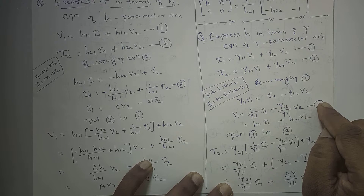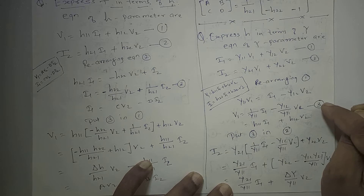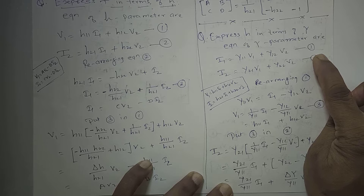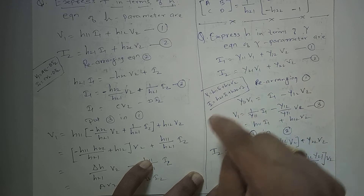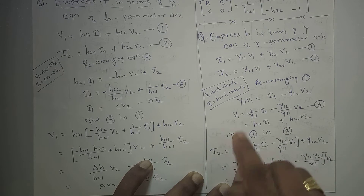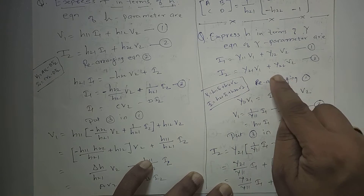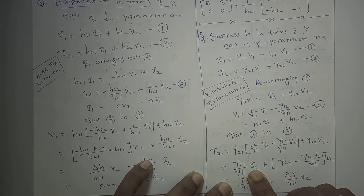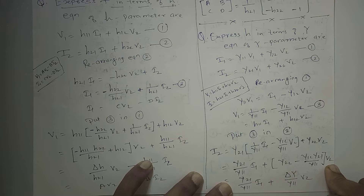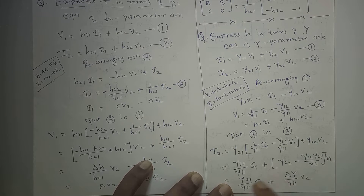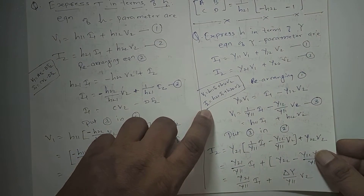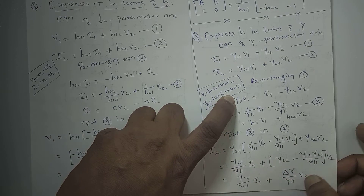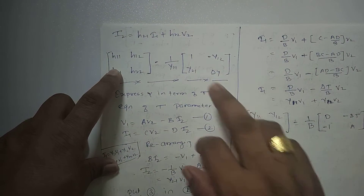Now substitute equation 3 into equation 2, replacing v1: i2 equals y21 times (1 upon y11 times i1 minus y12 upon y11 times v2) plus y22·v2. Combining terms: i1 coefficient is y21 upon y11, and the v2 coefficient is y22 minus y21·y12 upon y11, which after cross-multiplication gives delta-y upon y11. So i2 equals y21 upon y11 times i1 plus delta-y upon y11 times v2. Comparing with the standard equation i2 equals h21·i1 plus h22·v2, we get h21 equals y21 upon y11 and h22 equals delta-y upon y11.